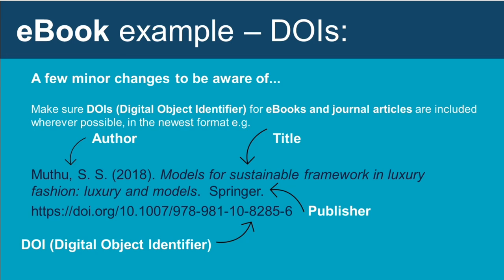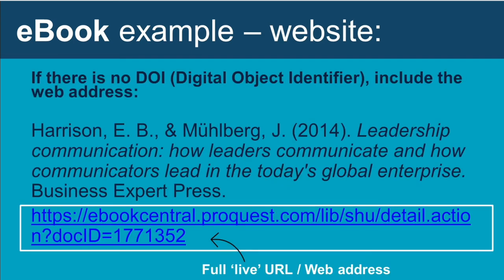Let's look at some examples using APA 7. The first example is an ebook with a DOI. The standard format has not changed much: author, date, and title in italics. You just need to include the name of the publisher, not the place of publication, and then the DOI. For an ebook with no DOI, the reference includes a full live link. This example is from Hallam Library's ebook platform ProQuest Ebook Central, including family names and initials of the two authors, with the title in italics and the publisher Business Expert Press, followed by the full live URL.